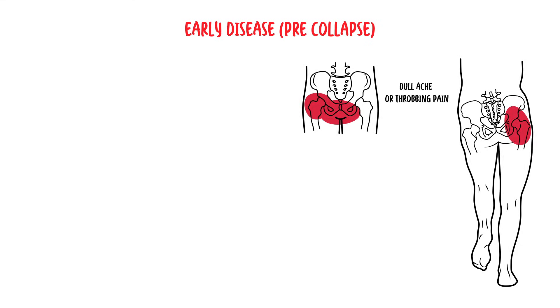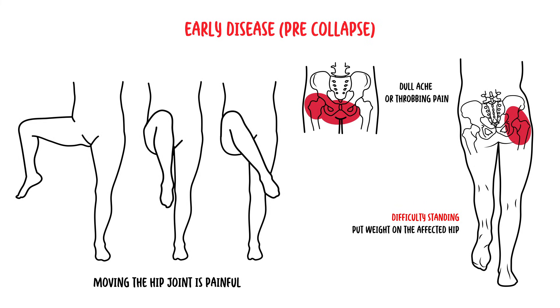In early disease, which is pre-collapse, the hip can be painful, and this is typically the first symptom. It could be a dull ache or throbbing pain in the groin or the buttock. There can be difficulty with weight-bearing on the affected side, and moving the hip joint can also be slightly painful. Early on, the hip joint has relatively good range of motion, because only the femoral head is involved in the early stages.